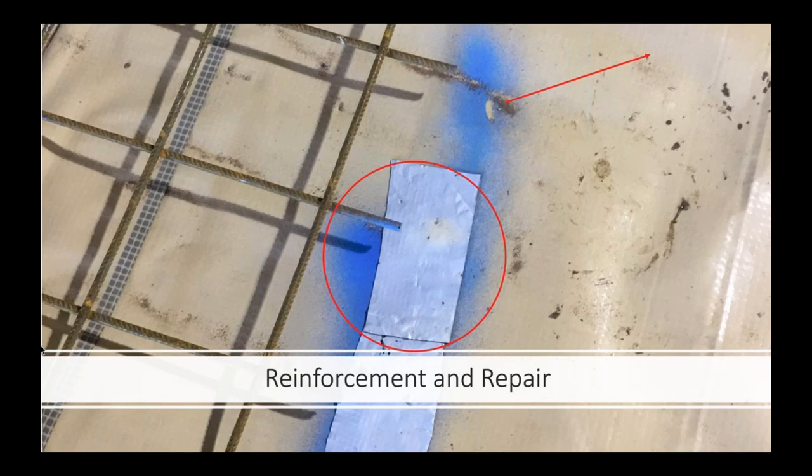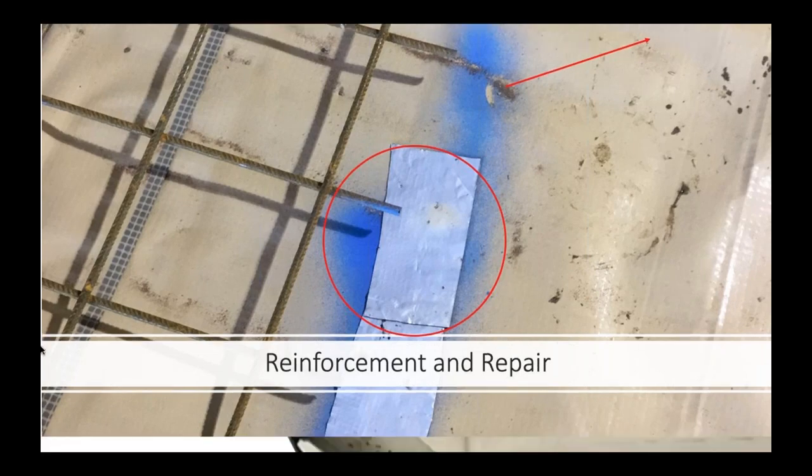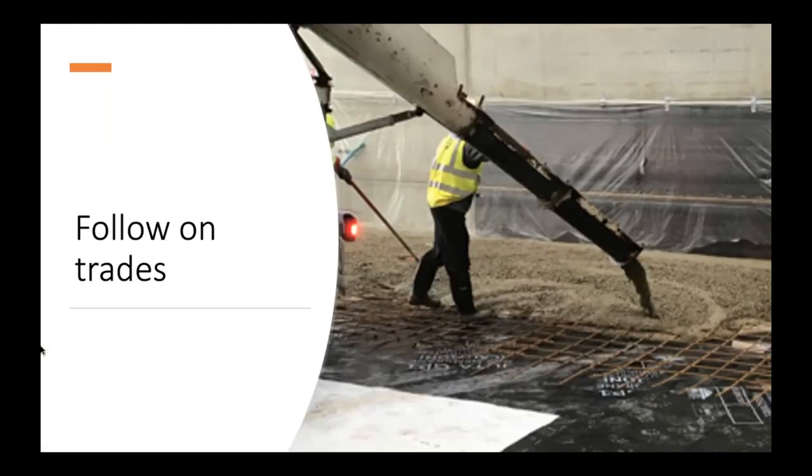Reinforcement, especially the weak stuff — you stand on it and some ends are pointed up, some pointed down and they just go straight through the membrane. What also happens is someone with a still saw fires along cutting all the ends off, thinking he's doing a good job, and he's actually burning holes in all the membranes as he goes. There's a lot to be aware of with follow-on trades.